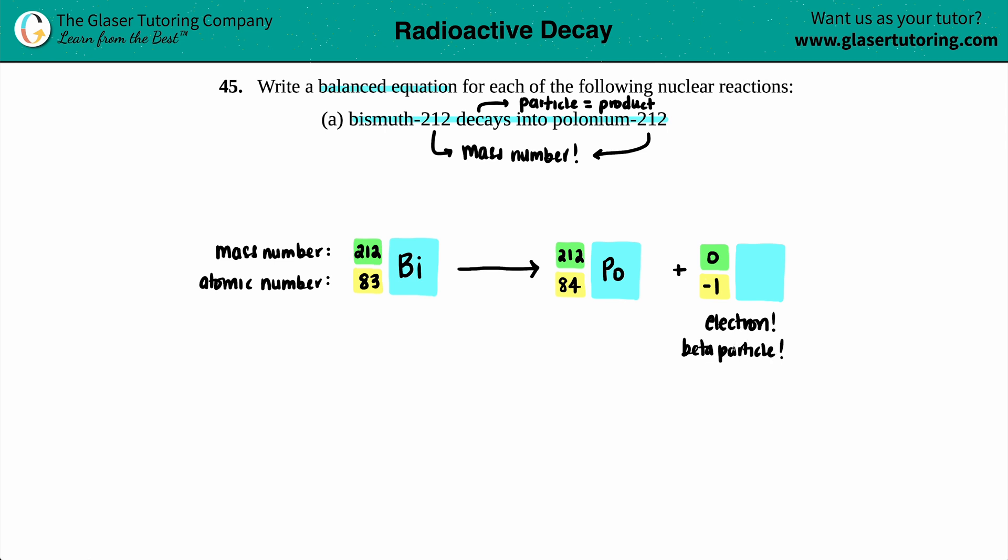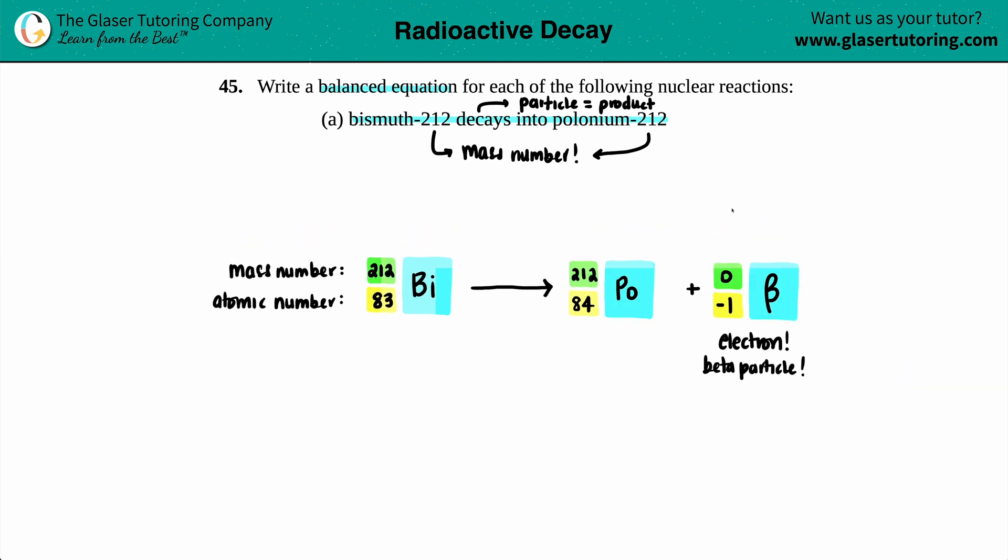Now whether you want to put the e in here for electron or b in here for beta, it does not matter. You'll get full credit for both. I like using beta, but you could put e, doesn't matter to me. And this now finally is the answer to this question.